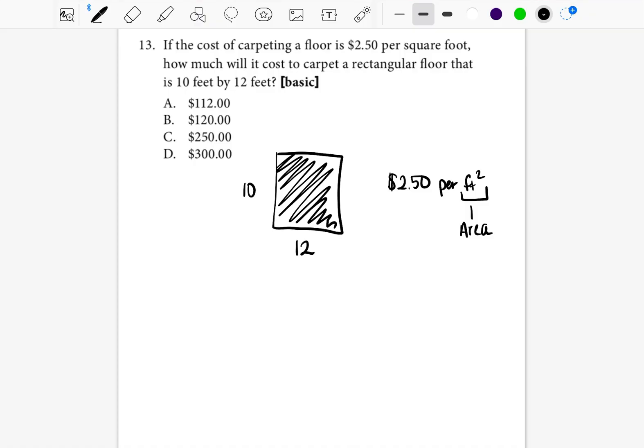How do you find the area of a rectangle? Area is equal to length times width. Area is equal to 10 times 12. Area is equal to 120 feet squared.